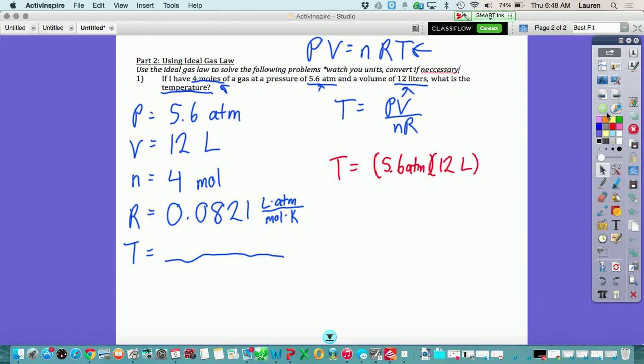So T equals 5.6 atm times 12 liters, divided by 4 moles and 0.0821 liter atmospheres over moles Kelvin.